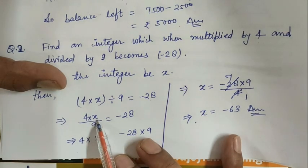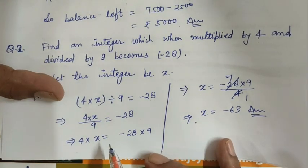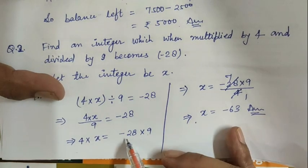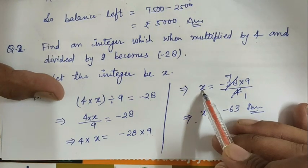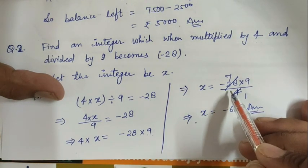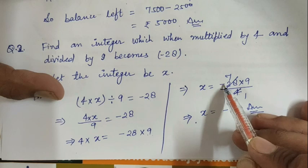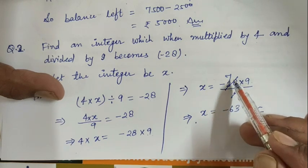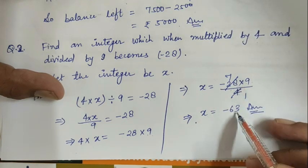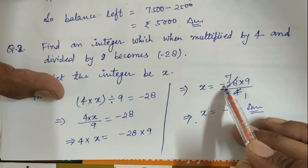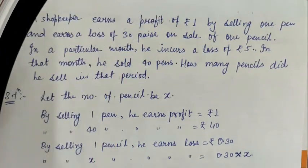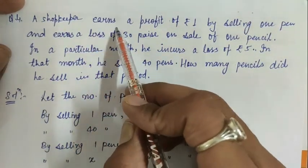To find x, we multiply both sides by 9, then divide by 4. So 4x / 9 = -28, then 4x = -28 × 9, so x = (-28 × 9) / 4. 4 into 28 goes 7 times, so -28 / 4 = -7. Now 7 multiplied by 9 is 63, and since these are unlike signs, it will be negative. So x = -63.